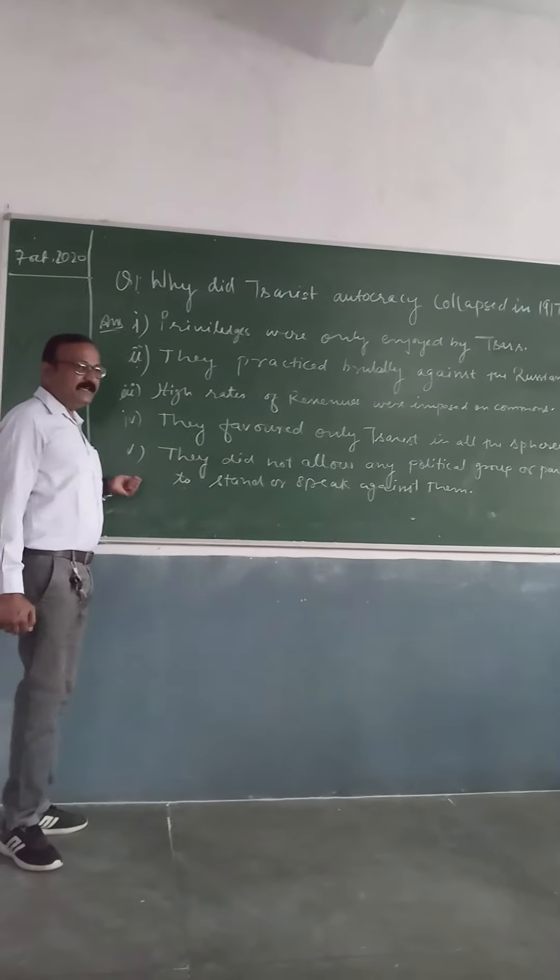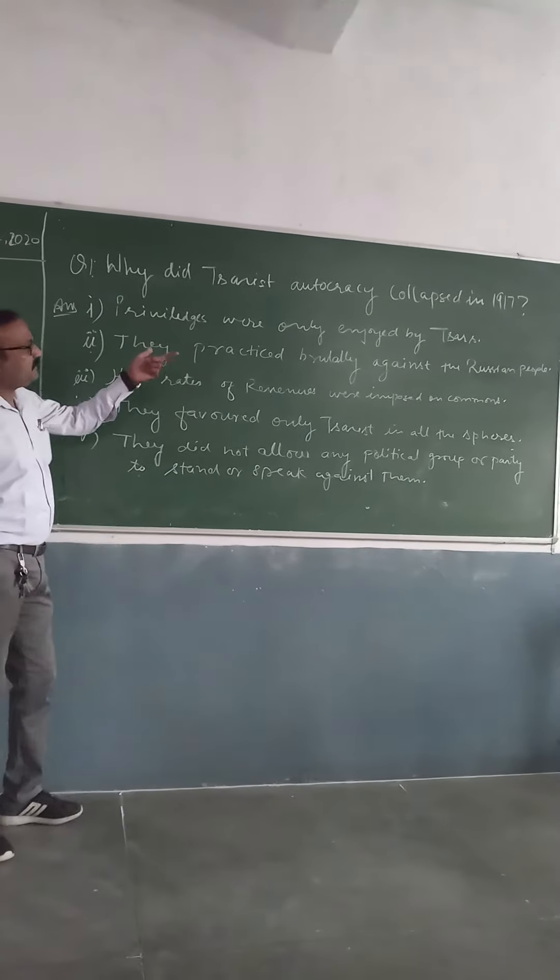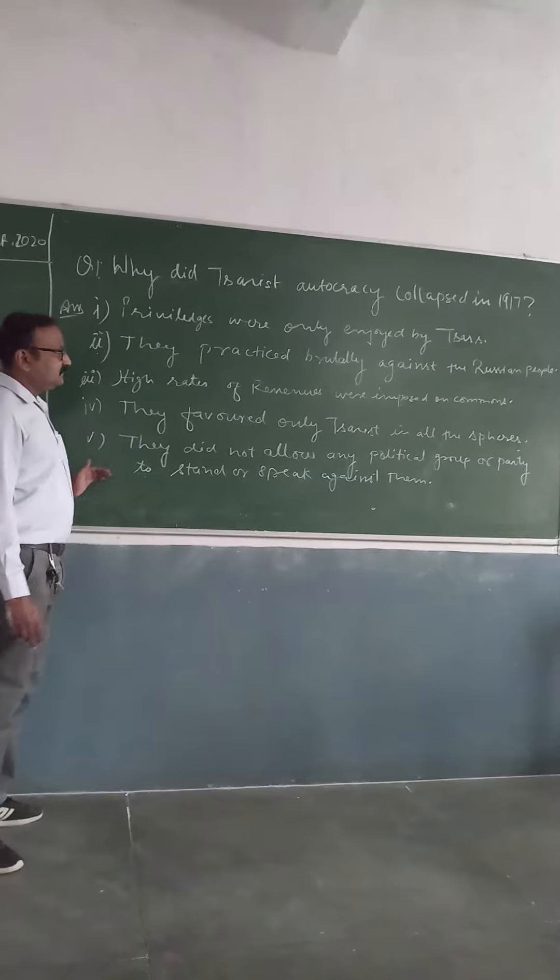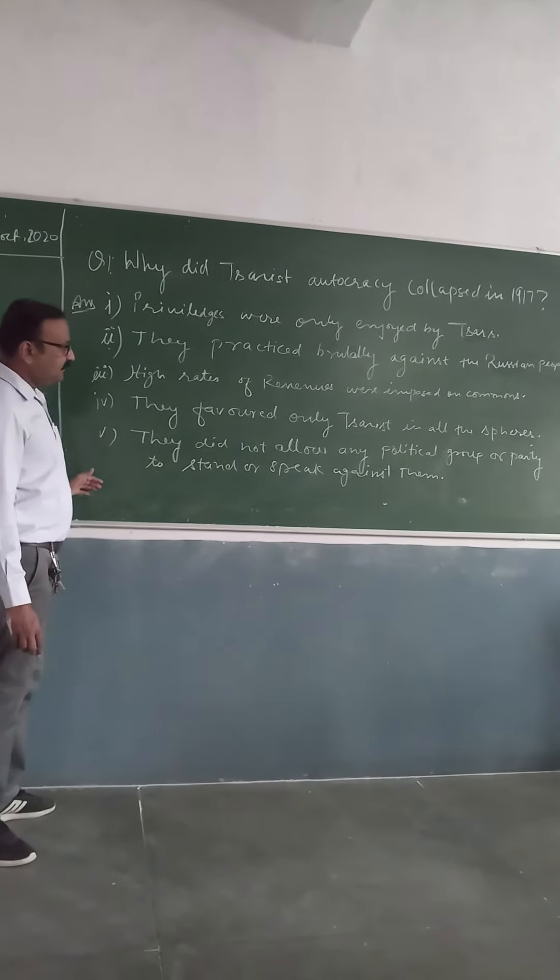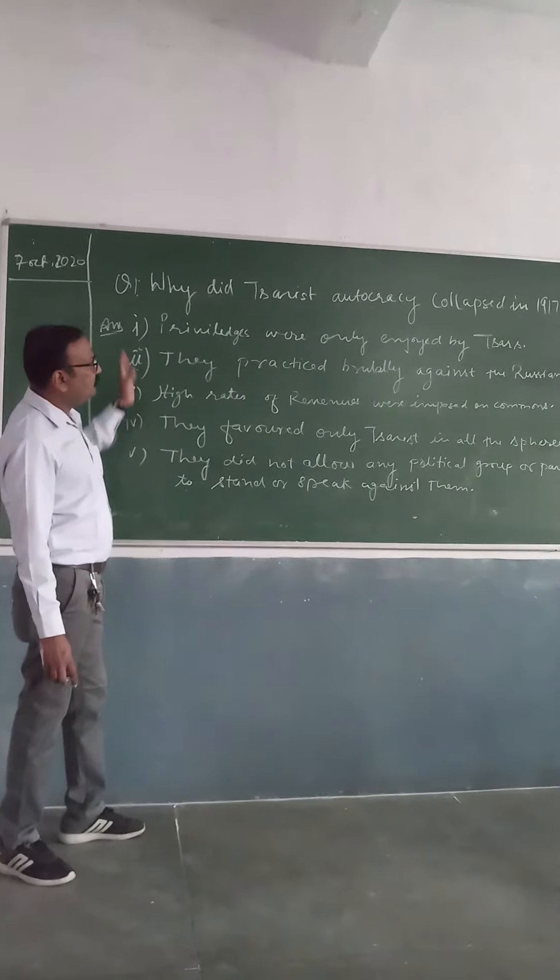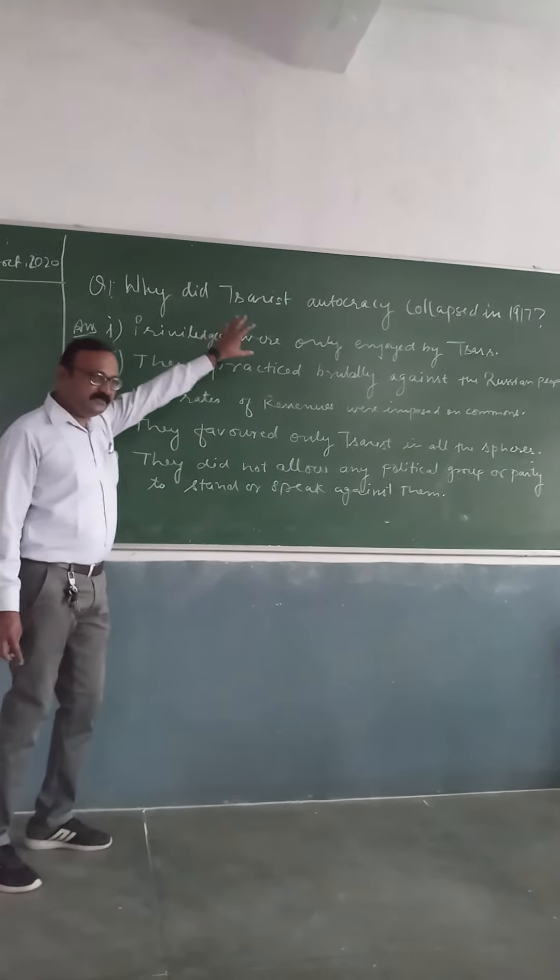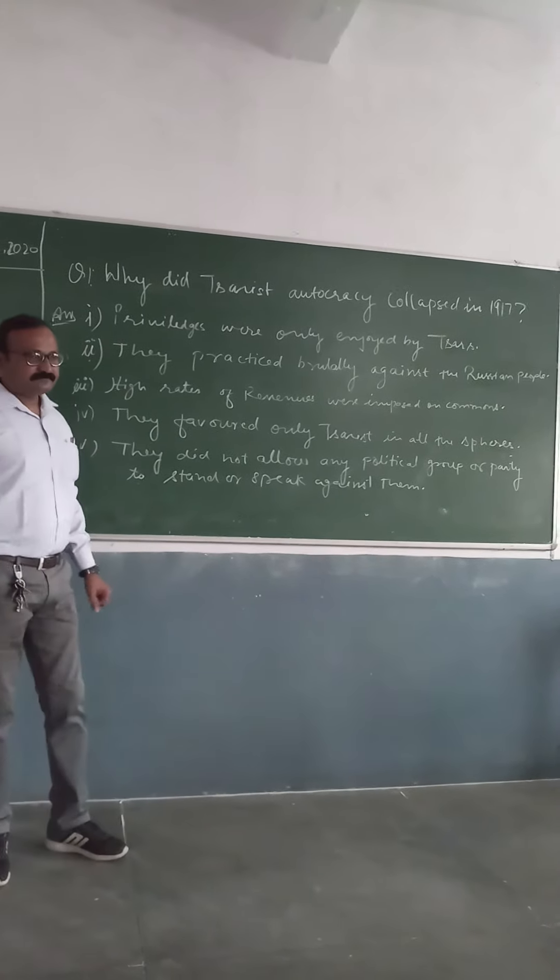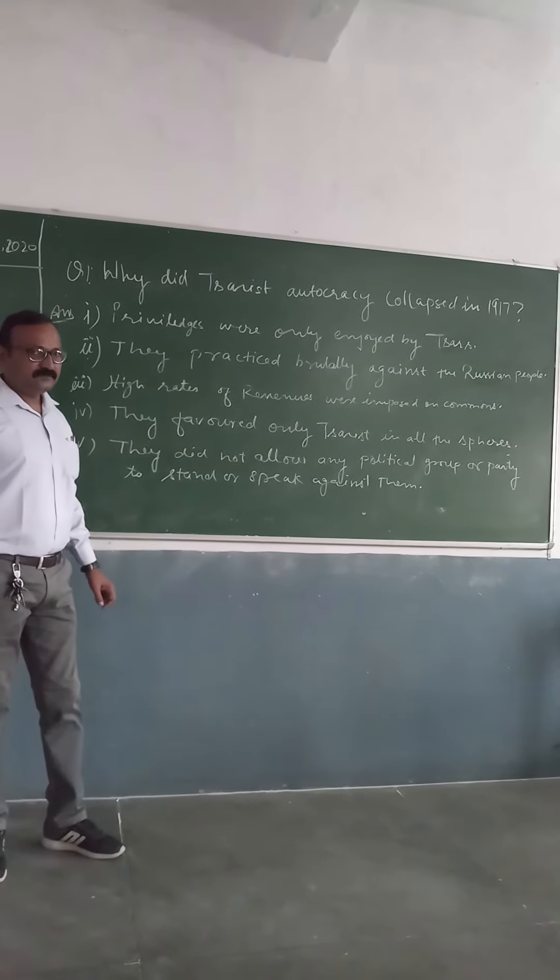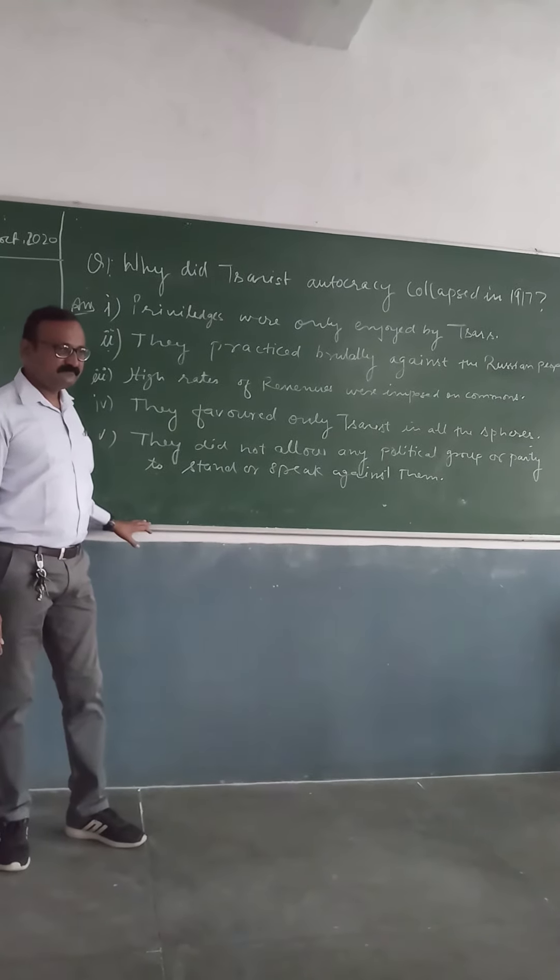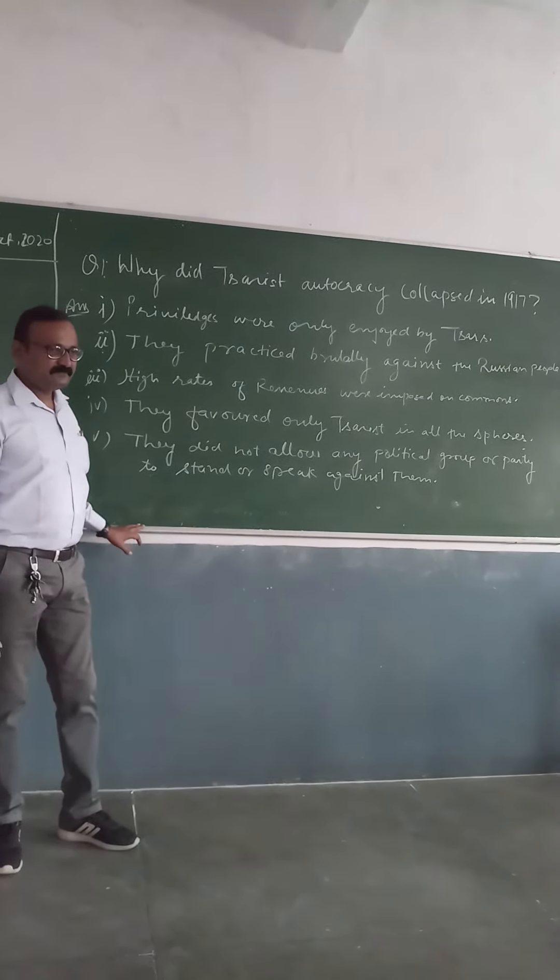These 5 points are enough to explain the autocracy. Because of this, the revolution started and people wanted to end this autocracy. Is it clear?